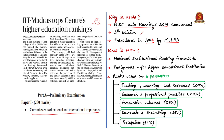NIRF stands for National Institutional Ranking Framework. It is an indigenous ranking framework for higher education institutions in India. It outlines the methodology to rank institutions across the country based on five parameters: teaching, learning and resources; research and professional practices; graduation outcomes; outreach and inclusivity; and perception.